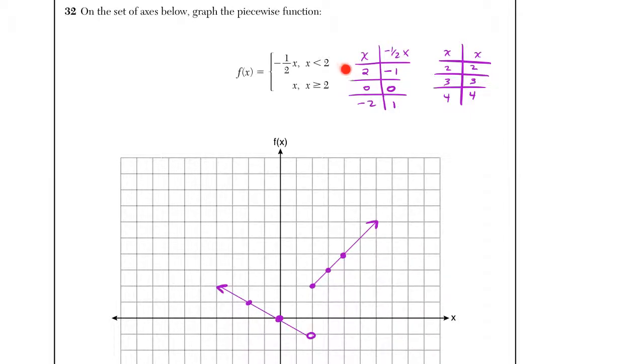Now, once I plot this first function, being that this is less than, I usually make a little mark next to my table, but I didn't here. I'm going to have an open circle on this graph, and this is going to continue. Even though I stopped here, I can keep going anything less than 2. So this graph does have an arrow on the left-hand side.